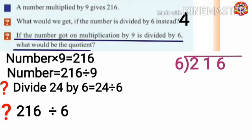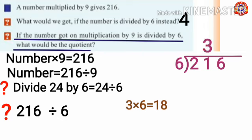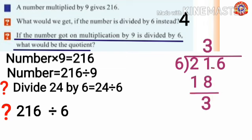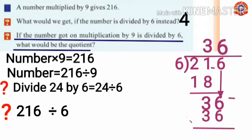216 divided by 6: take the first digit 2; 2 is less than 6, so take the next digit also — we get 21. How many times does 6 go into 21? There is no 21 in the multiplication table of 6, so we take 18. 3 times 6 is 18. 21 minus 18 equals 3. Bring down 6 to get 36. How many times does 6 go into 36? 6 times. 6 into 6 is 36. 36 minus 36 equals 0. So if the number got on multiplication by 9 is divided by 6, the quotient is 36.